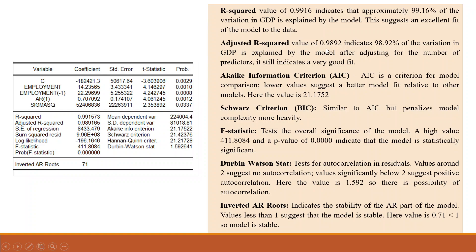Adjusted R square value of 0.9892 indicates 98.92% of the variation in GDP is explained by the model after adjusting for the number of predictors. It still indicates a very good fit.